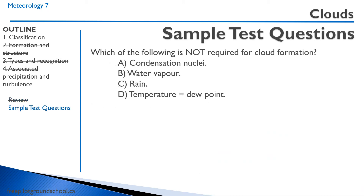Let's do some sample test questions. First: which of the following is not required for cloud formation? A — condensation nuclei: we do require these, such as dust and smoke, for water vapor to condense around. B — water vapor: we do require this. C — rain: no, we don't require rain for cloud formation; sometimes clouds produce rain but it's not needed for clouds to form. D — temperature equals dew point: this is correct, the air must be saturated with 100% relative humidity. So the correct answer is C — rain is not required for cloud formation.